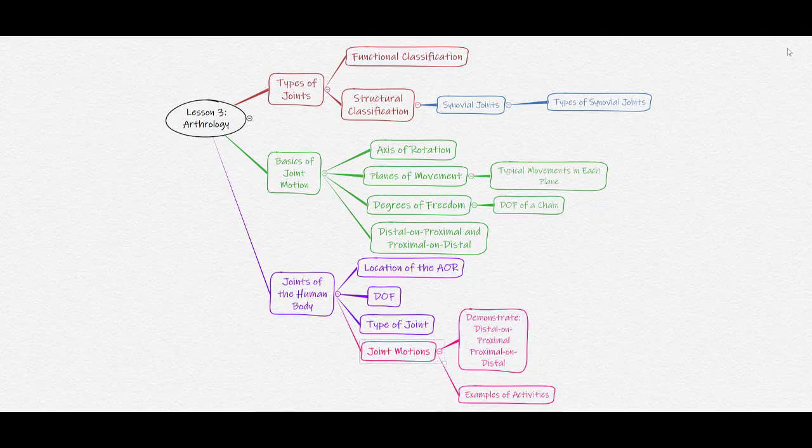Let's review what we've learned so far. The lesson was organized into three main areas: the type of joints, the basics of joint motion, and the joints of the human body. For joint types, we looked at functional and structural classification, with particular focus on synovial joints and their different types. We discussed the basics of joint motion: axis of rotation, planes of movement with typical movements in each plane, degrees of freedom for individual joints and chains, and distal on proximal and proximal on distal motion.